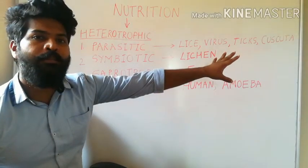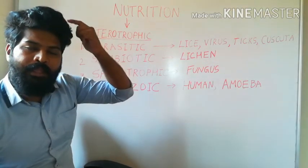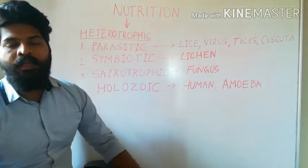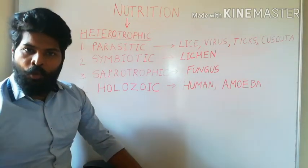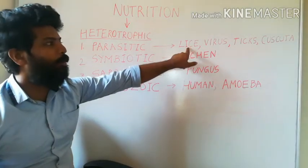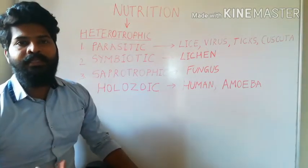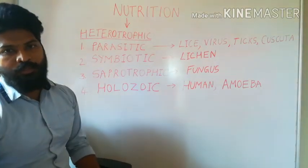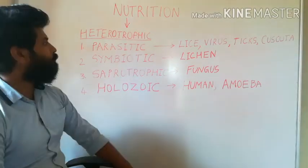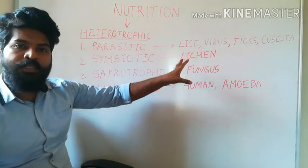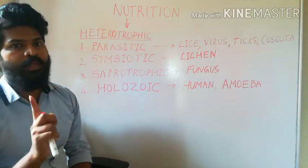Cascuta is a plant example of a parasite. The organism from which the parasite obtains food is called the host. Lice are present in the scalp of the head, so they are present outside the body — we are the host and lice are the parasite. A virus is usually present inside the body and obtains all nutrients directly from the host. The host is always a living organism — that is very important.